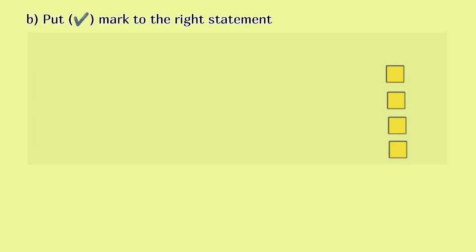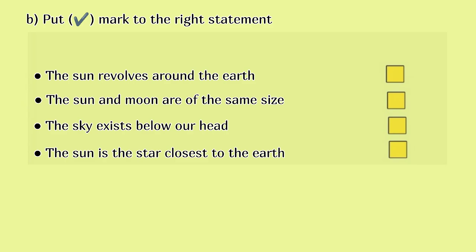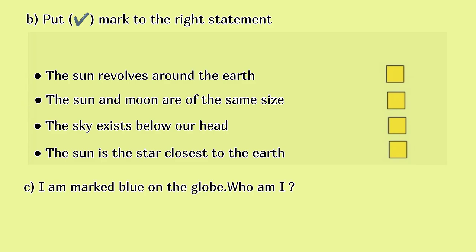B. Put a tick mark to the right statement: The sun revolves around the earth. The sun and moon are of the same size. The sky exists below our head. The sun is the star closest to the earth. C. I am marked blue on the globe. Who am I?